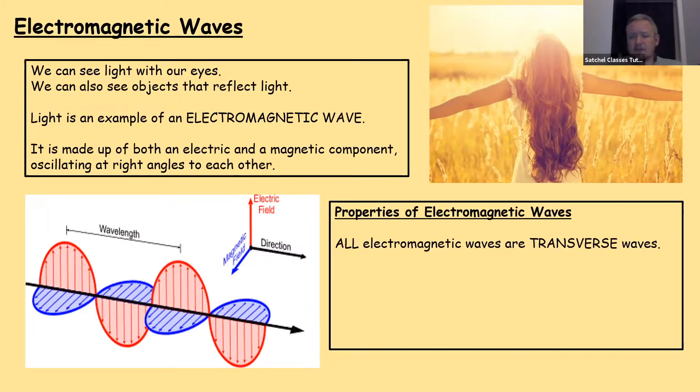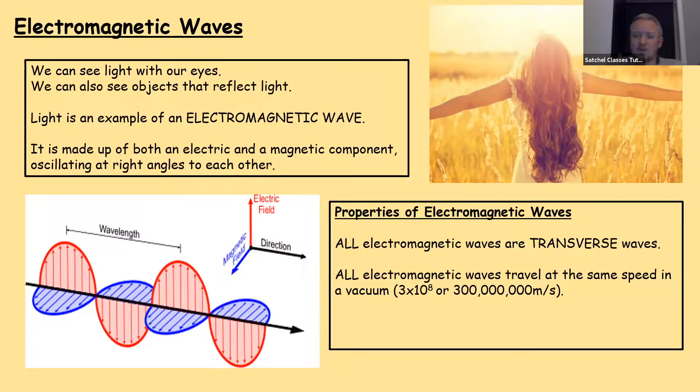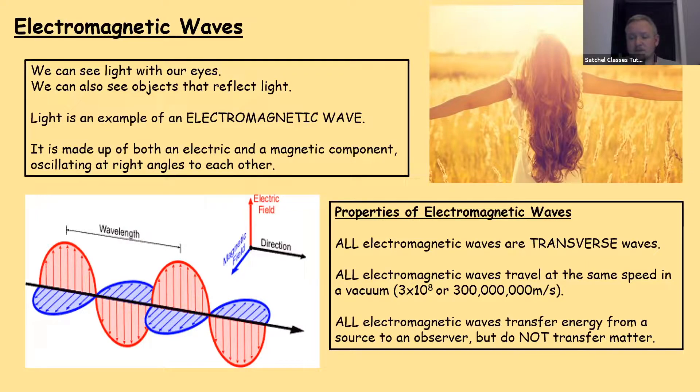Properties of electromagnetic waves then. These are things that you can be asked about in your GCSE exams. All electromagnetic waves are transverse. All electromagnetic waves travel at the same speed in a vacuum - they travel at the fastest speed there is, which is 3 times 10 to the 8 or 300 million meters every second. All electromagnetic waves transfer energy from a source to an observer, but they do not transfer matter. They just carry energy from one place in space to another.